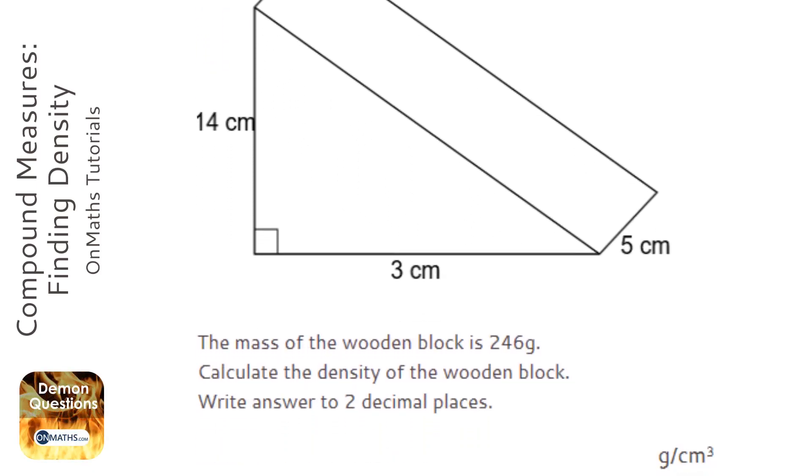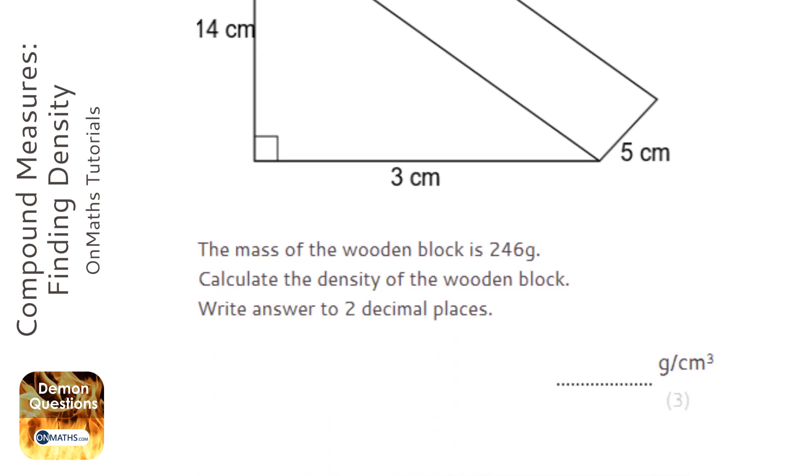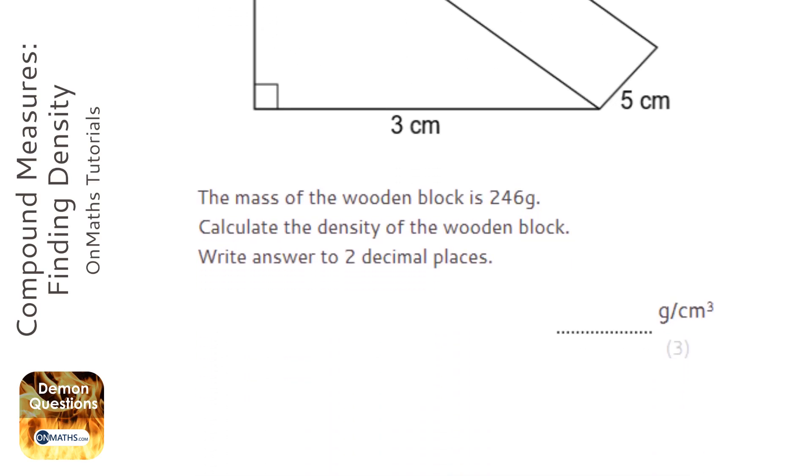In this question we're asked to find the density. The first thing I'm going to do is draw my triangle for density. Density equals mass over volume, so to work out density it's mass divided by volume.